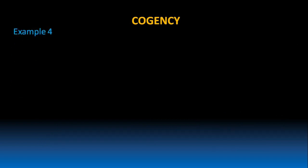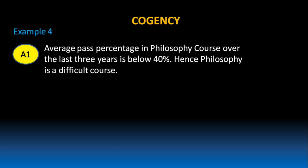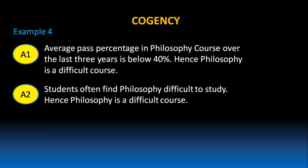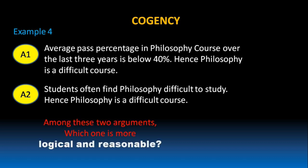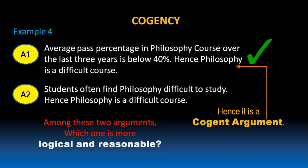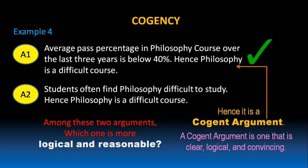Let's take one more example. Argument 1: The average pass percentage in the philosophy course over the last three years is below 40%. Hence, philosophy is a difficult course. Argument 2: Students often find philosophy difficult to study. Hence, philosophy is a difficult course. Among these two arguments, which one is more logical and reasonable? Argument 1 is more logical and reasonable because it gives convincing reasons to say that philosophy is a difficult course. Hence, it is a cogent argument. A cogent argument is one that is clear, logical and convincing.